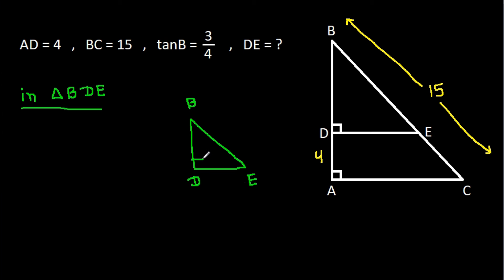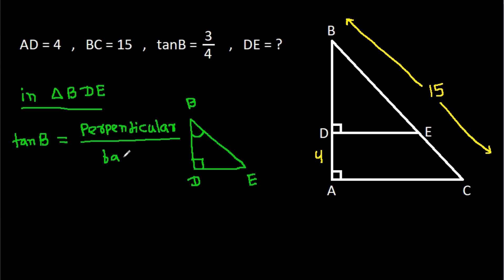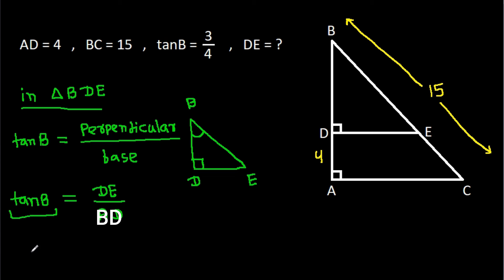Angle BDE is 90 degrees. So tanB equals perpendicular over base. TanB will be equal to perpendicular DE over base AD, and tanB is 3 over 4, that is DE over AD.